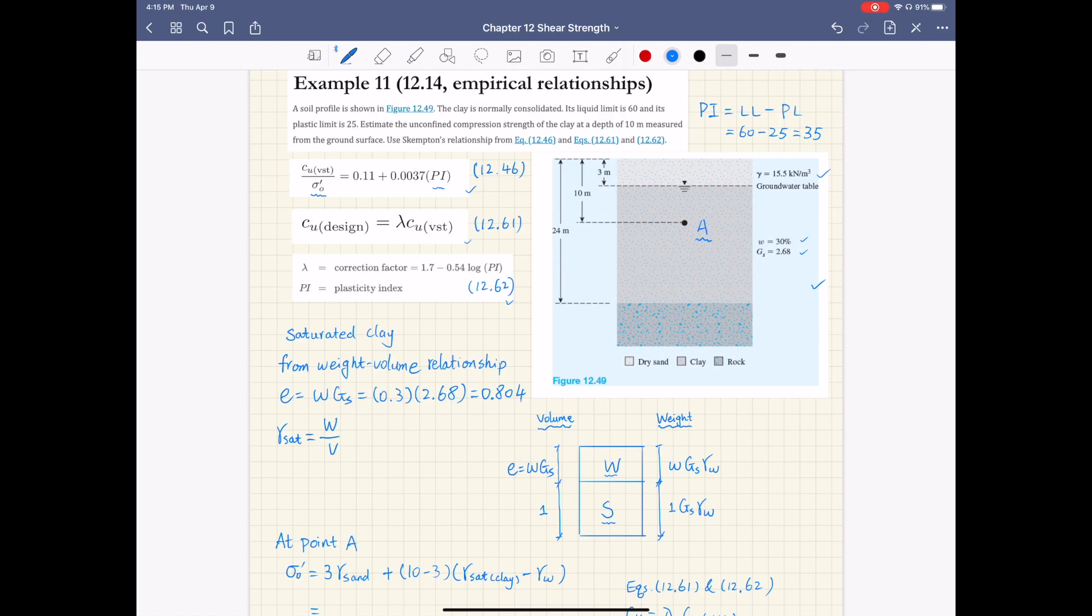Then to get the unit weight, the saturated unit weight of the clay layer, it's basically total weight over total volume. So if you use the phase diagram here, the total weight is 1 plus omega times GS gamma water divided by total volume, which is simply 1 plus e. If you substitute the unit weight of water, GS, void ratio, and water content, you'll get a saturated unit weight of 18.95 kilonewtons per meter cubed. The unit weight of water is a constant, 9.81 kilonewtons per meter cubed.